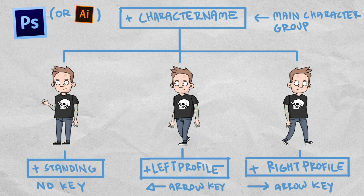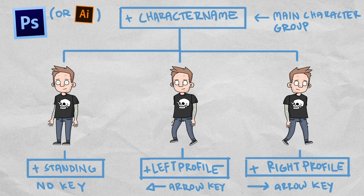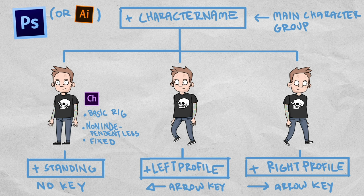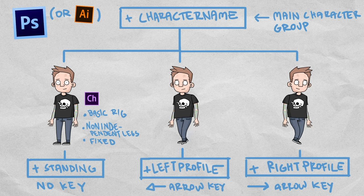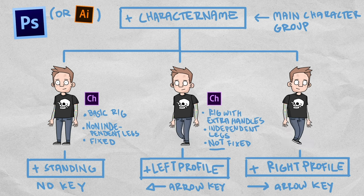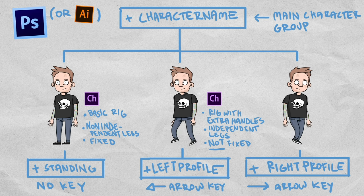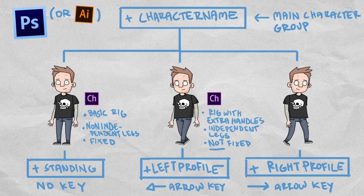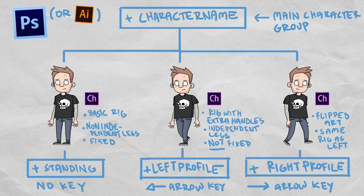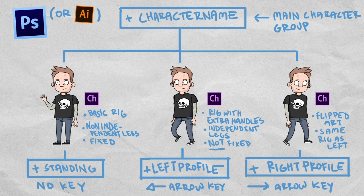All three of these profiles will need to be rigged. The good thing is that they just differ a tiny bit. The standing profile will have legs that are non-independent, basically just part of the body and fixed to the ground. On the left profile the artwork will look the same as the standing one but the legs will be independent in Character Animator and not fixed at all. The body on this profile will also have some additional handles added for the walk behavior. The right profile will basically just be a flipped version of the left one and the rigging will look exactly the same.